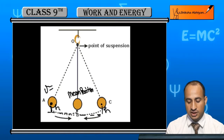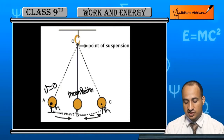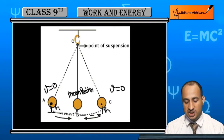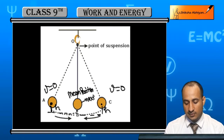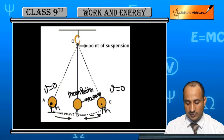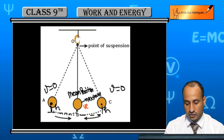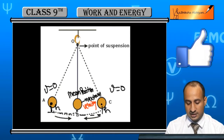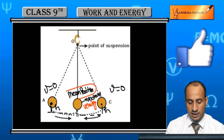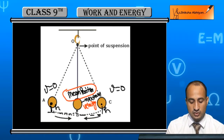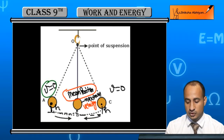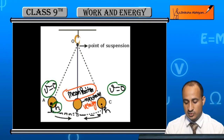At the extreme positions, the velocity is 0. At the mean position, the velocity is maximum — the maximum velocity is at the mean position. At the extreme position, the velocity is 0, but the height is maximum.